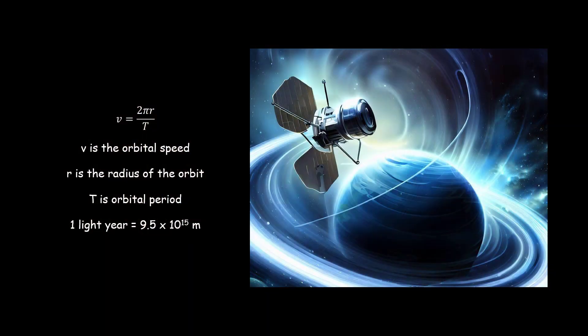Let's take a moment to understand the underlying principles governing the solar system and its celestial objects. The orbital speed of a planet can be calculated using the equation V equals 2π times R divided by T, where V represents the orbital speed, R is the distance from the planet to its center, and T is the time taken to complete one orbit. Moreover, one light year, the distance traveled by light in a vacuum in one year, is equivalent to approximately 9.5 times 10 to the power of 15 meters. This vast unit helps us fathom the immense scale of our cosmic surroundings.